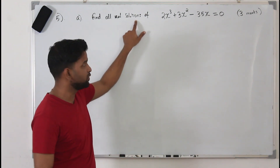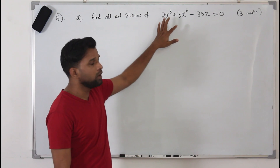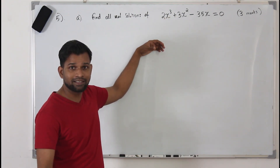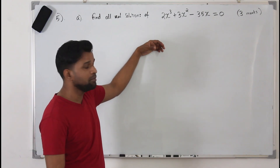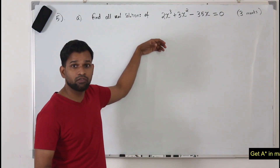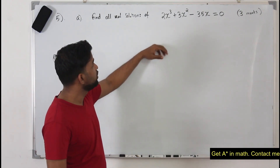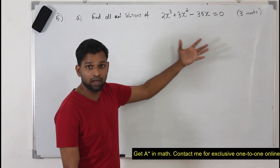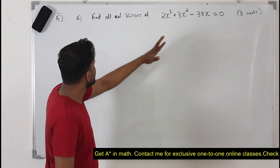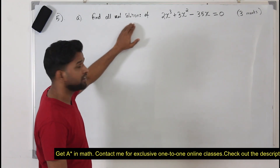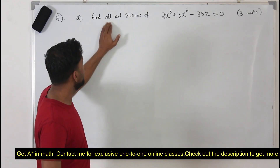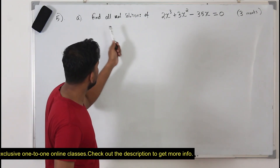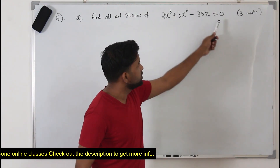What do they mean by real solutions? When you solve an equation you might get a real number or a complex number. An imaginary number is a square root of a negative number. When you have a square root of a negative number, you omit that solution because it's not a real solution. So we consider only the real numbers.